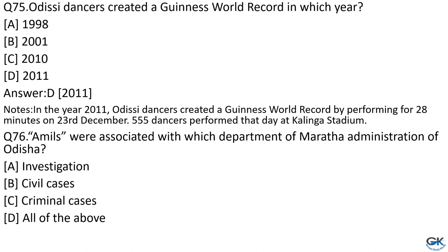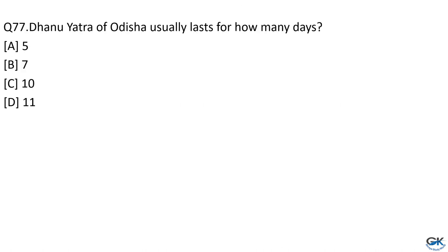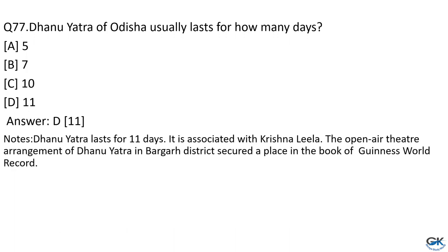Question No. 76: Amalas are associated with which department of Maratha administration of Odisha? Option A: Investigation. Option B: Civil Cases. Option C: Criminal Cases. Option D: All of the above. The answer is Option D, all of the above. Question No. 77: Dhanu Yatra of Odisha usually lasts for how many days? Option A: 5. Option B: 7. Option C: 10. Option D: 11. The answer is Option D, 11 days. Dhanu Yatra is associated with Krishna Leela, and the open-air theatre in Bargarh district secured a place in the Guinness World Records.